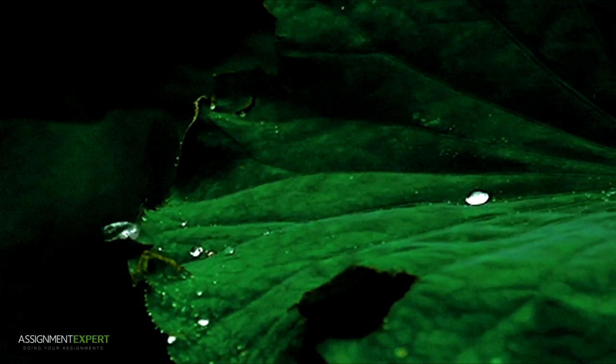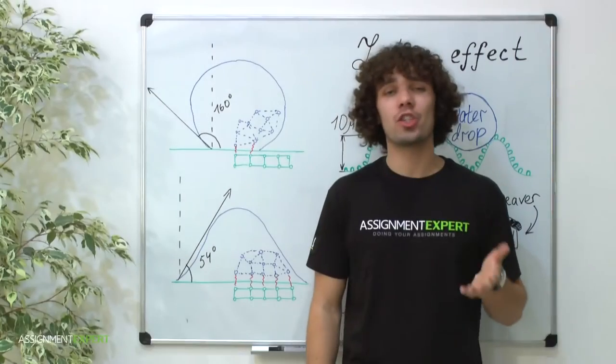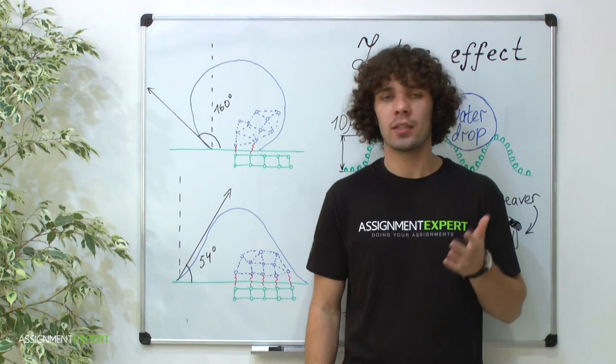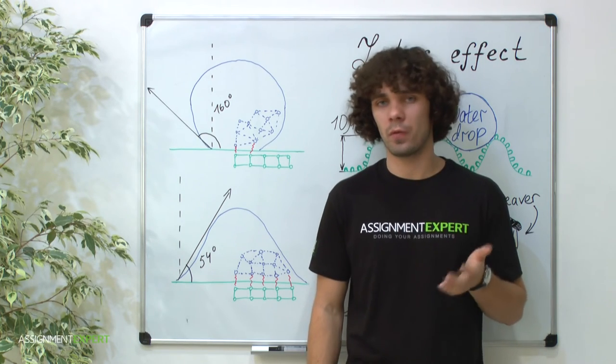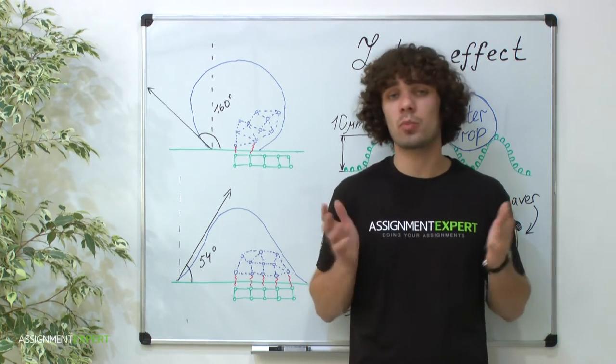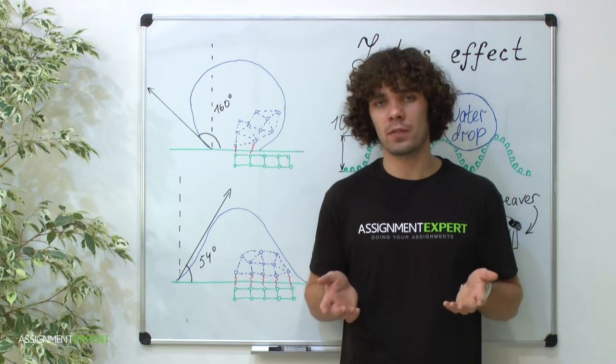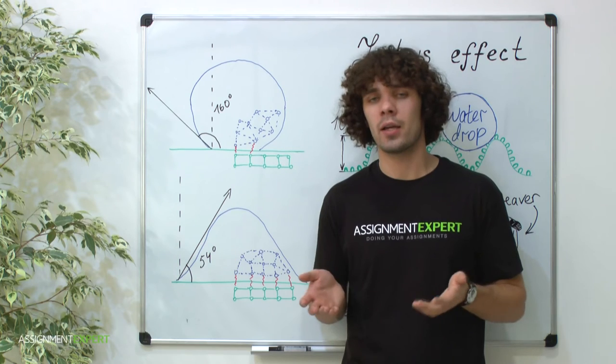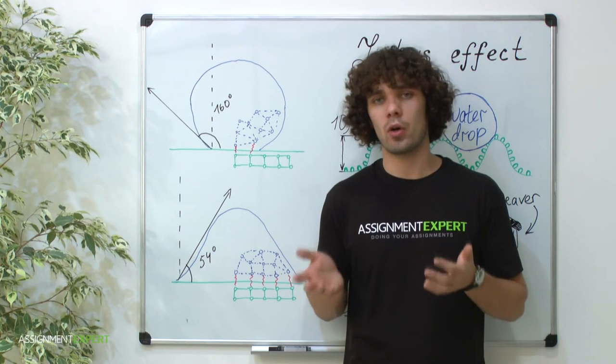This is what we call lotus effect. The German botanist William Barthlott discovered it in 1976, despite the effect having been noticed before. Many insects such as butterflies need to secure themselves from the excessive water, as they can lose their ability to fly, so their wings have the same coating.